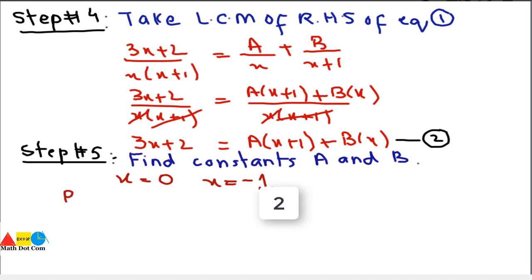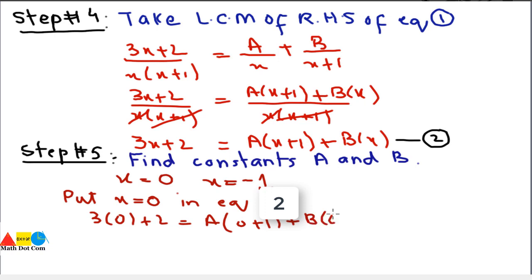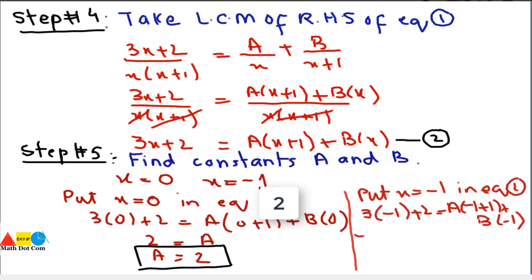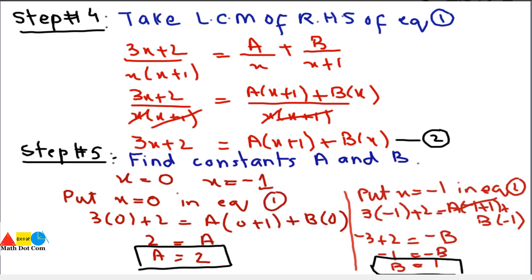First, put x = 0 into equation 2: 3(0) + 2 = a(0 + 1) + b(0), which gives 2 = a. So a = 2. Next, put x = −1 into equation 2: 3(−1) + 2 = a(−1 + 1) + b(−1), giving −3 + 2 = 0 − b, so −1 = −b, therefore b = 1. We have now found both constants: a = 2 and b = 1.